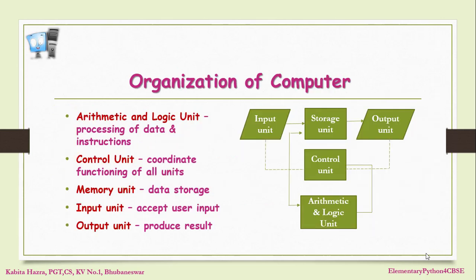The three major units of the computer are input unit, processing unit, and output unit, depending upon the major functions of the computer. The input unit accepts user data and instructions — for example, we enter or accept data through the keyboard, mouse, etc.